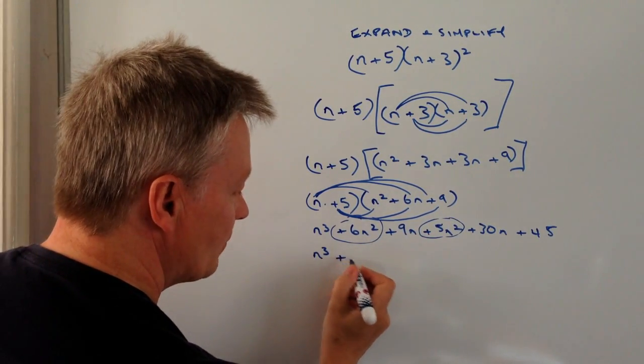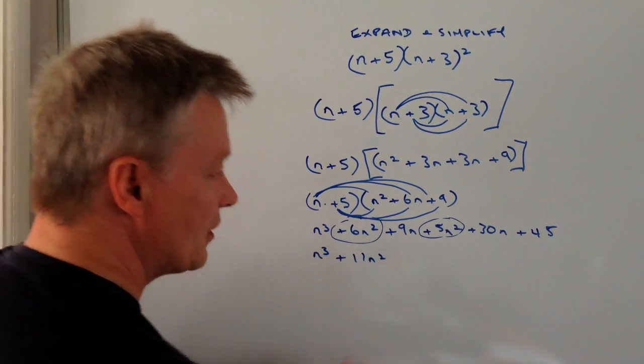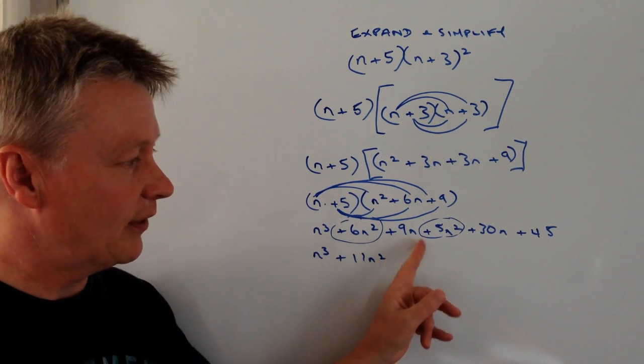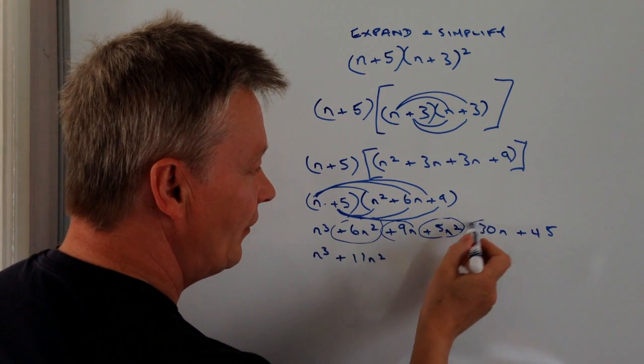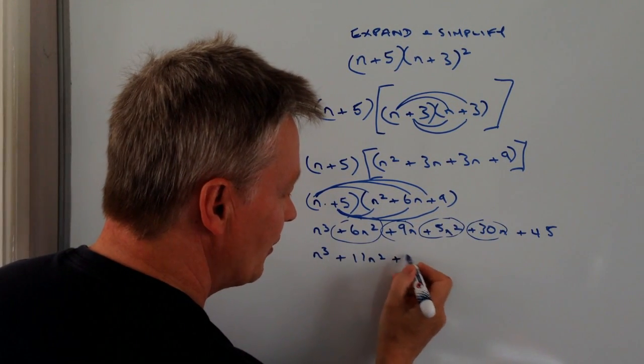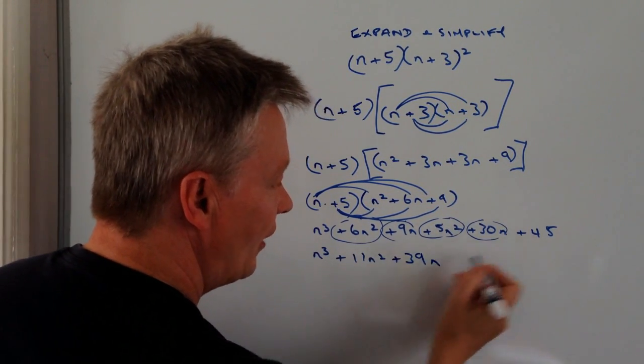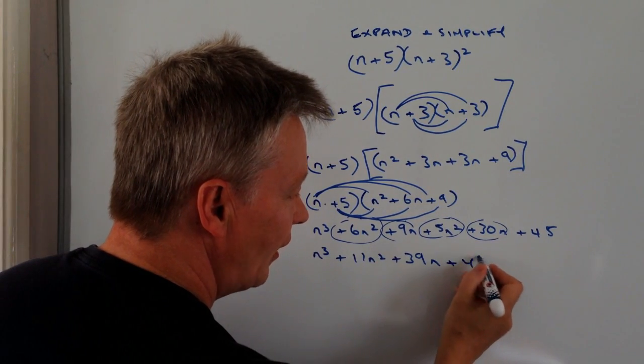If I add those two together, I've got plus 11n squared. Then I've got plus 9n and plus 30n. So that's going to be plus 39n and then I've got plus 45 at the end.